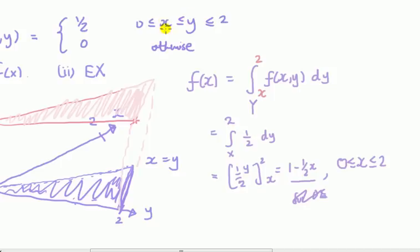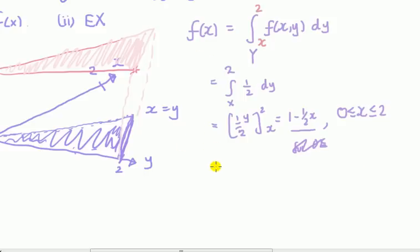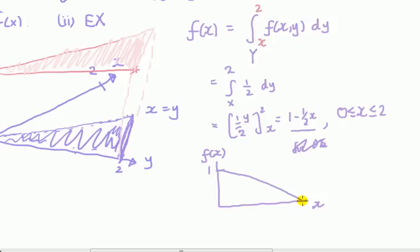Don't stop there though — that's not a full answer. You have to specify for what values of x this holds, which is x between 0 and 2. Some might ask why not between 0 and y — but this function depends on x only, so it can't depend on another variable. If you graph this marginal, it starts at a maximum of 1, then is a straight line down to 0 at x equals 2, with a slope of negative one half.